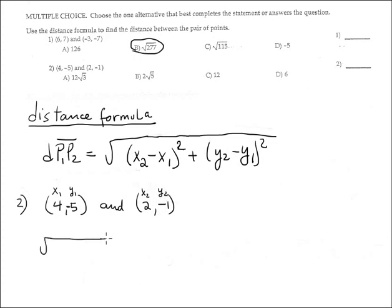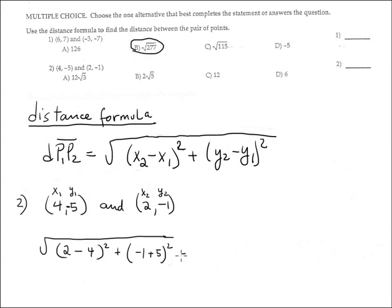Plug it into the formula. The formula is square root of the subtraction: X2 is 2 minus X1 is 4. Plus Y2 — Y2 is negative 1 — minus Y1 is 5. Double negative makes positive 5, squared. So we have square root of (2 minus 4) squared: that's negative 2, squared is 4. Plus (negative 1 minus negative 5) is 4, squared is 16.